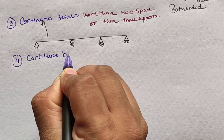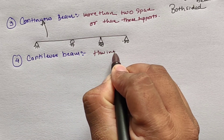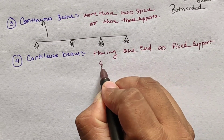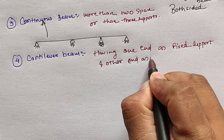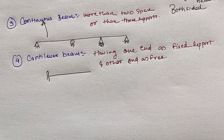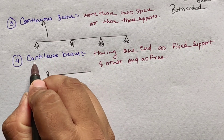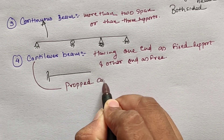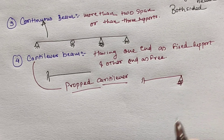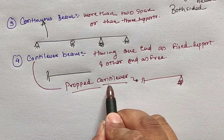The fourth type is the cantilever beam, defined as a beam having one end as a fixed support and the other end as free. A subdivision of the cantilever beam is the propped cantilever beam, in which one end is supported by a fixed support while the other end is supported by a roller.